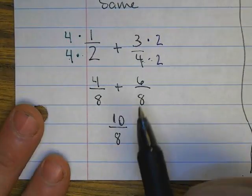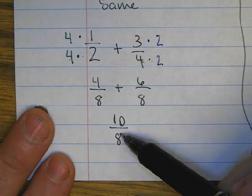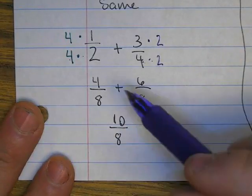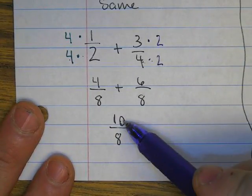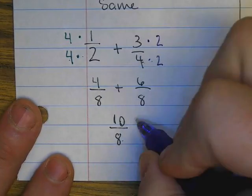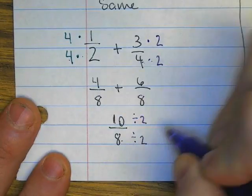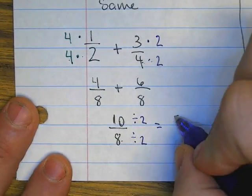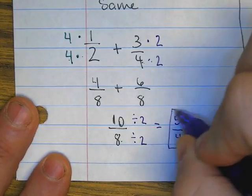To simplify, divide the top and bottom by the same number if possible. What number divides both ten and eight? Both can be divided by two, so divide top and bottom by two to get five-fourths. We're done.